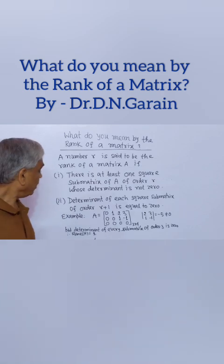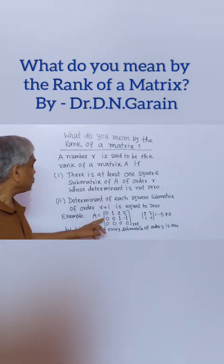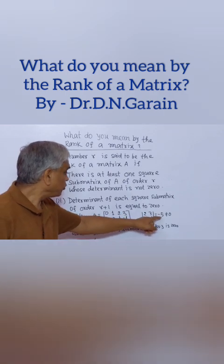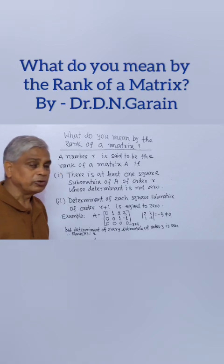For example, let A be a matrix of size 3 by 4. Here, determinant of a square sub-matrix of order 2 equals minus 5, not equal to zero.